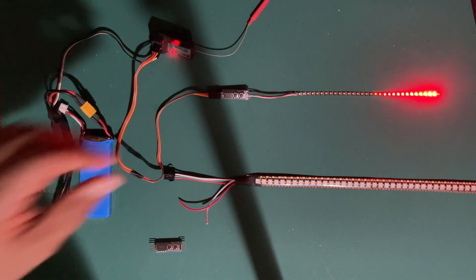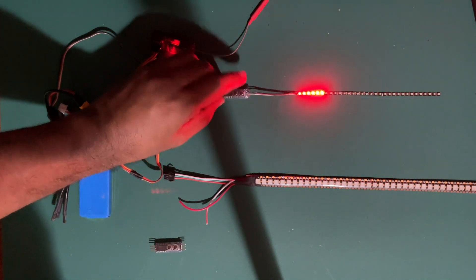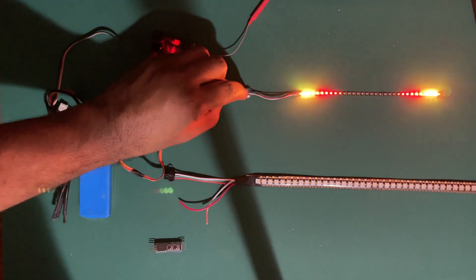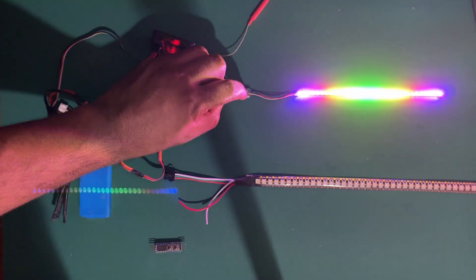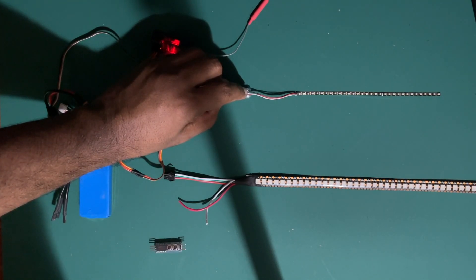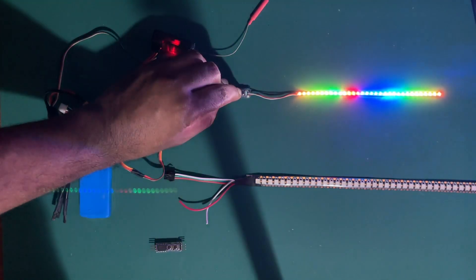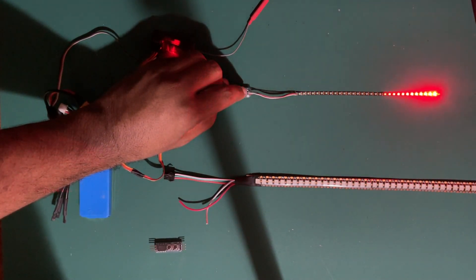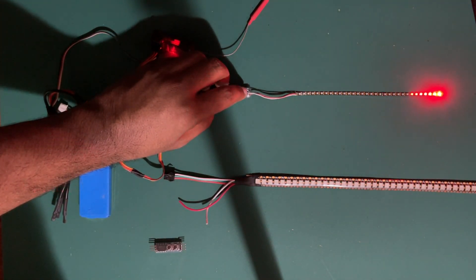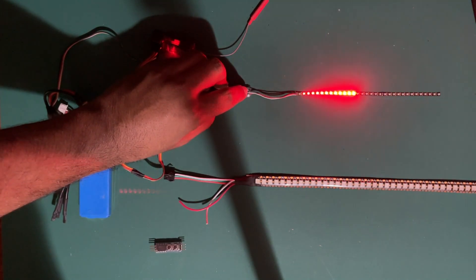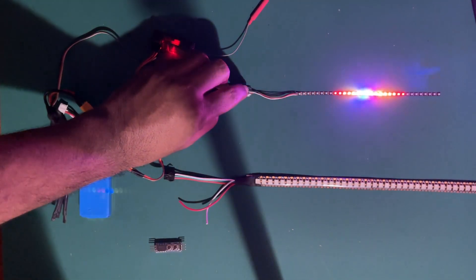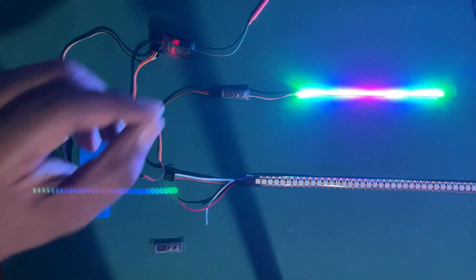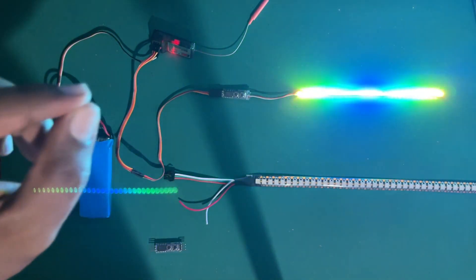So as you can see we can cycle through the patterns with the remote control button. Let's keep it aside and we can use the buttons in the control as well. Let me show you. Likewise you can go up in the patterns like off pattern and also we can go down with the other button.